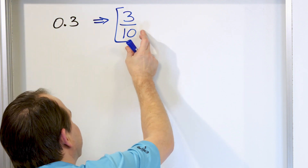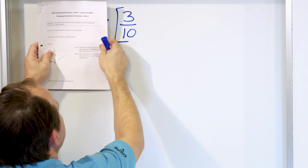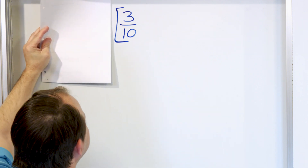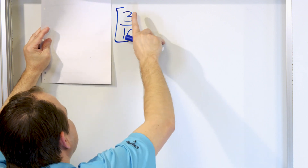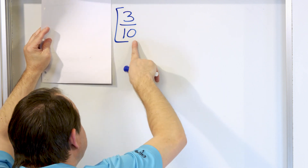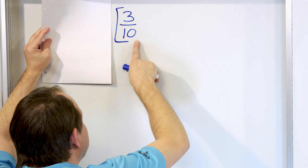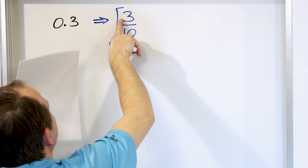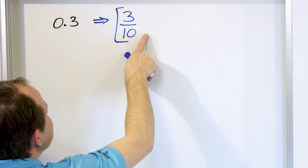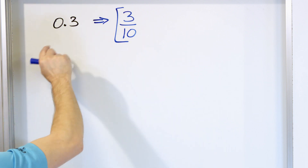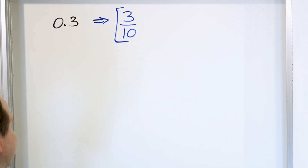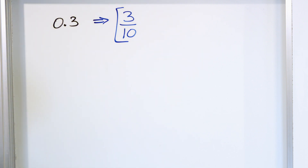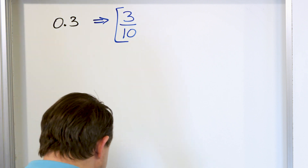If I were to start with this fraction and convert it back to a decimal, I would have an invisible decimal on the whole number and, dividing by ten, move the decimal one spot to the left to get 0.3 — exactly what we started with. You can go either way back and forth and get to the same answers. If you're doing it all correctly, it should all make sense and give you correct answers no matter which way you go.